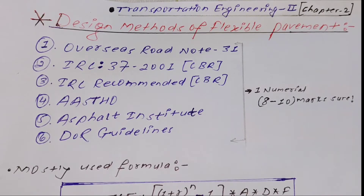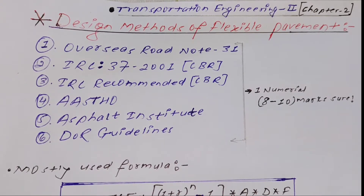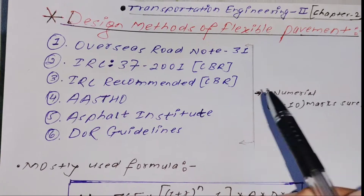Flexible and rigid pavement are important from an exam point of view — in universities like TU, the same topics are mostly repeated. There are numerical methods and old question solutions that are commonly asked.